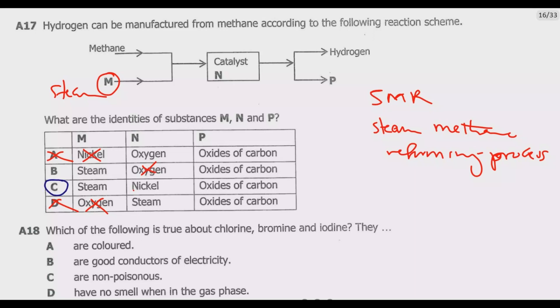Then what are the products? We have the oxides of carbon, which is true. The reaction, in case the question asks you to write it, is methane CH4 reacts with steam which is water H2O, then you get carbon monoxide CO plus hydrogen H2.